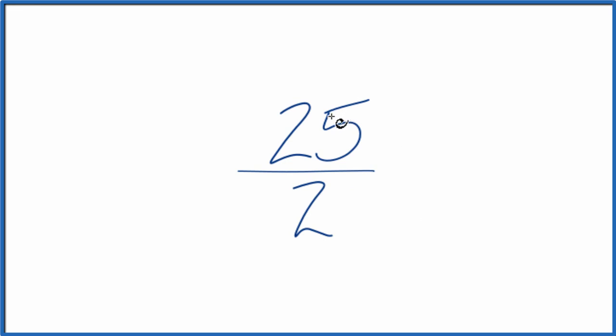If you divide 25 by 1, you get 25. If you divide 2 by 1, you get 2. So we really can't simplify 25 over 2 any further.